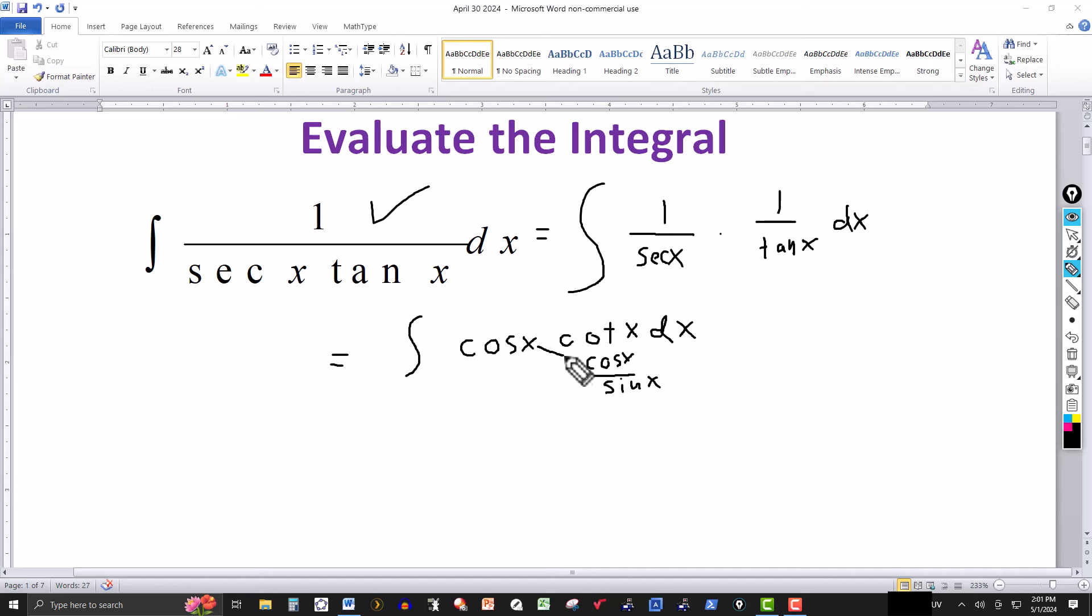Now we just multiply these out here, so that's the integral then of cosine squared of x over sine of x. Now standard u substitution won't work here, but again using trig identities...